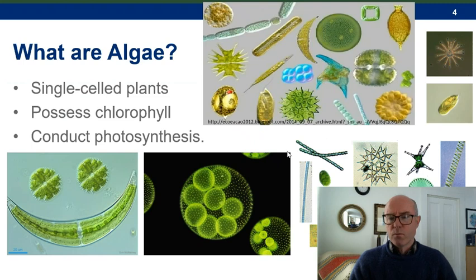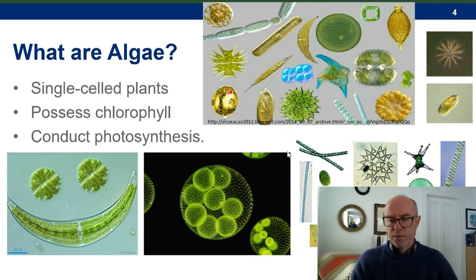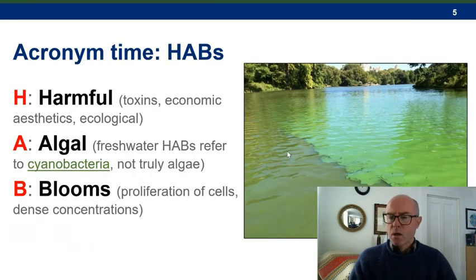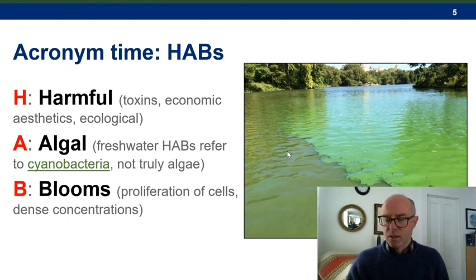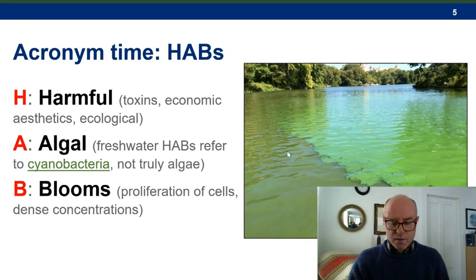Harmful algal blooms are composed of algae — there are many different kinds, all single-celled plants that possess chlorophyll and conduct photosynthesis. The cyanobacteria are particularly problematic; they have accessory pigments phycocyanin and phycoerythrin. HABs are harmful from the point of view of toxins they generate to compete with other organisms. A bloom in your lake can decrease property values, and even without toxins, once the algae die they rob oxygen from the water.